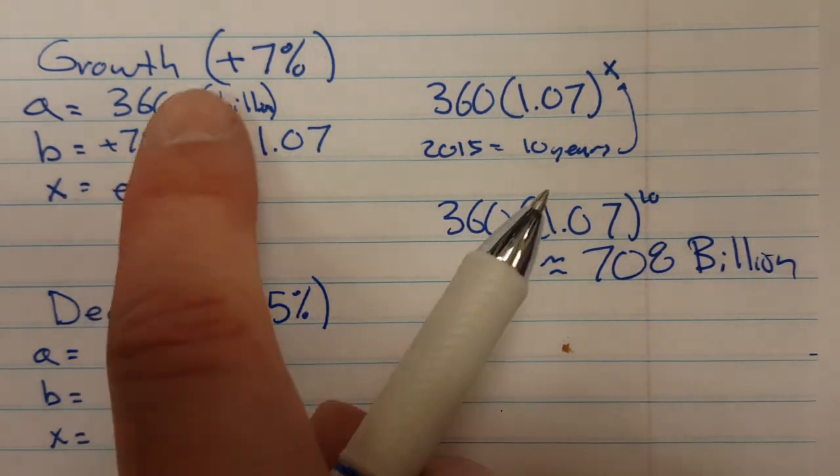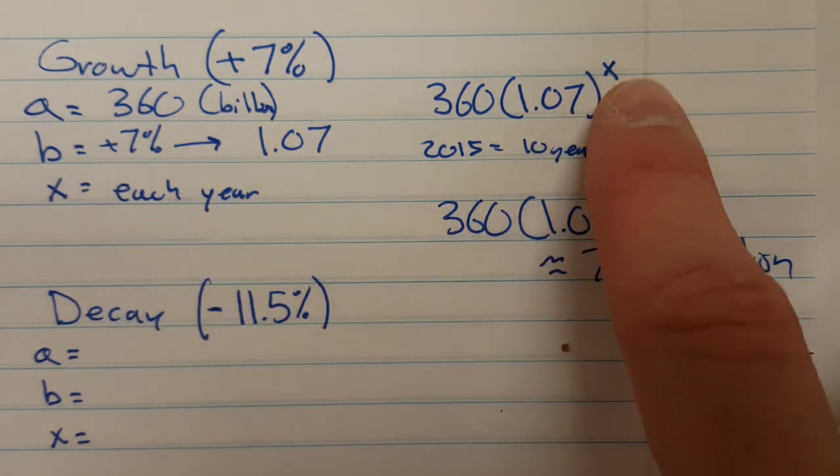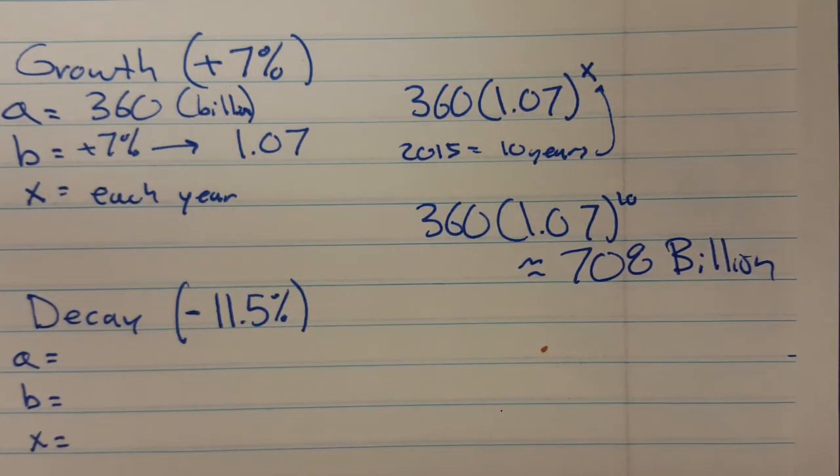So again, it's a 7% increase. So I'm going to use 1.07 each year. You figure out how many years go by and then you're good to go. Okay.